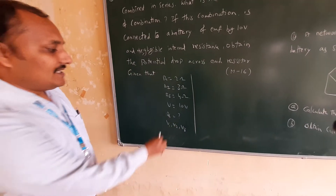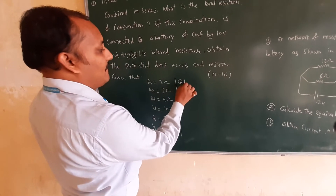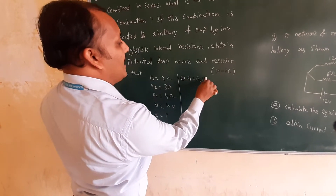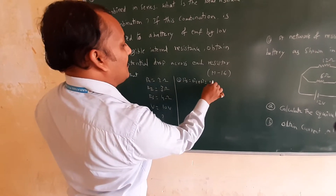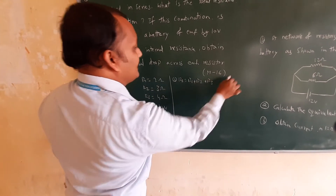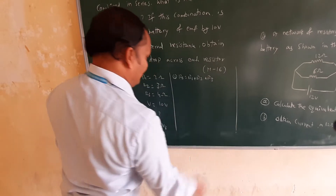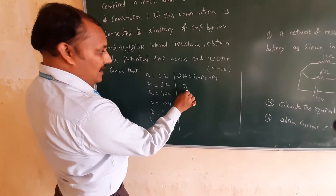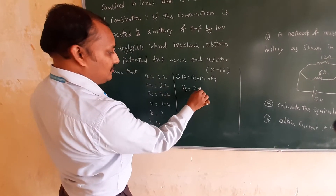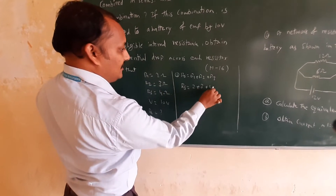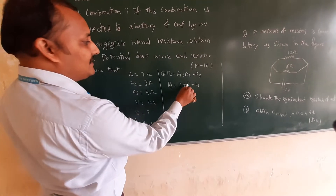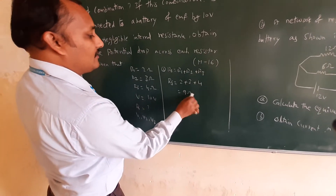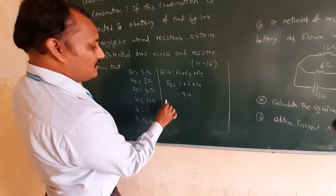The resultant resistance formula for series is Rs = R1 + R2 + R3. So Rs = 2 + 3 + 4. That gives us 4 + 3 = 7, then 7 + 2 = 9. Therefore Rs = 9 ohms.